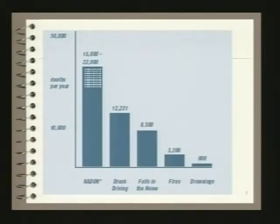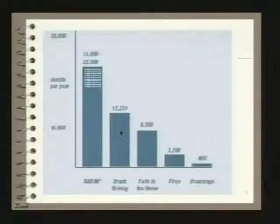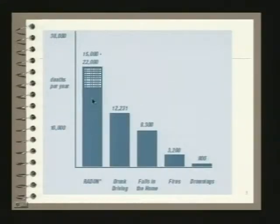To give you a sense of current EPA estimates, radon is estimated to produce about 15,000 to 22,000 lung cancer deaths per year — that's the predominant health hazard. Compared to other hazards such as drunk driving, falls in the home, fires, and drownings, radon stands out quite a bit. EPA has recently published new risk estimates that alter these values slightly, included as loose pages in your book.